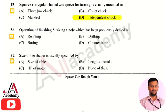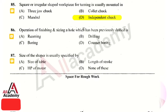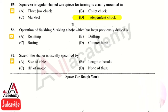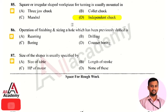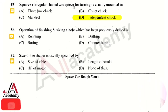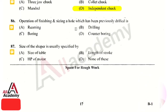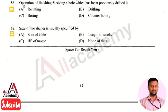The next question: a square or irregular-shaped workpiece for turning is usually mounted in — the right answer is option 4, that is independent chuck. An independent chuck consists of four jaws which help to hold an irregular or square-shaped workpiece firmly. The next question: the operation of finishing and sizing a hole which has been previously drilled is called what?